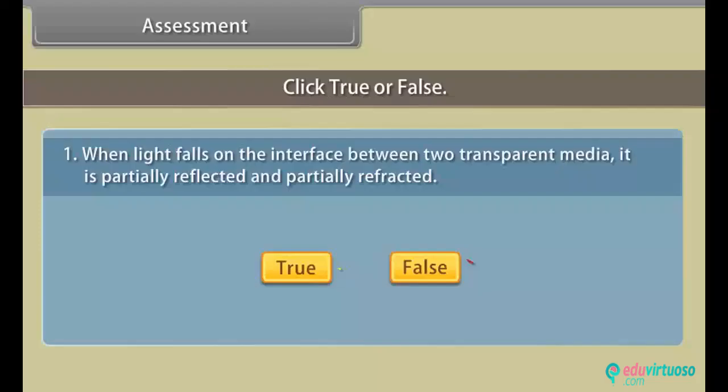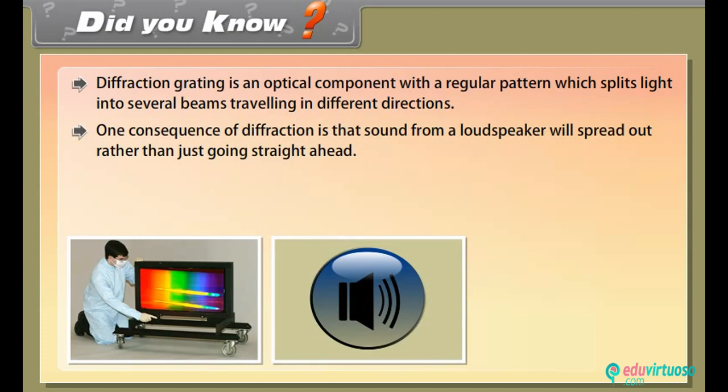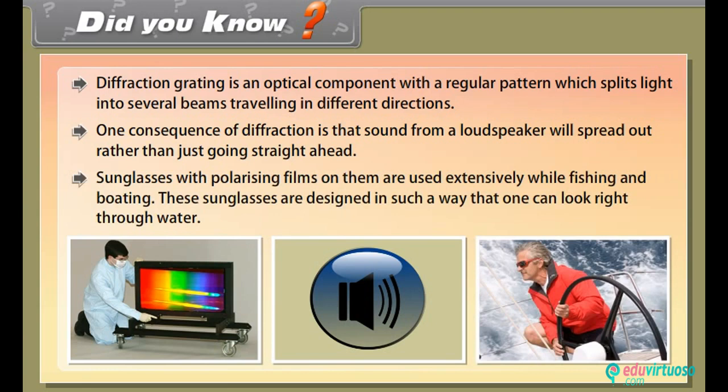Did you know: a diffraction grating is an optical component with a regular pattern which splits light into several beams traveling in different directions. One consequence of diffraction is that sound from a loudspeaker will spread out rather than just going straight ahead. Sunglasses with polarizing films are used extensively while fishing and boating, designed so that one can look right through water.